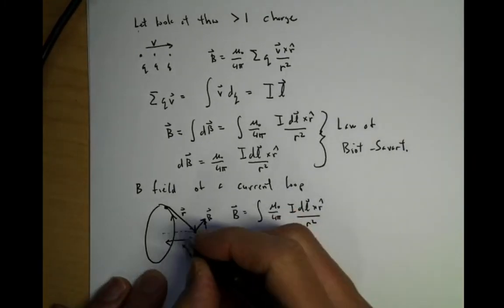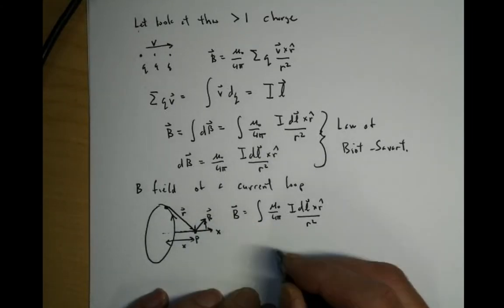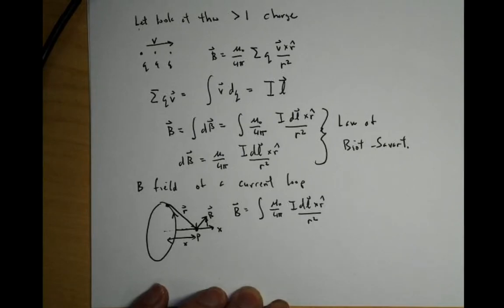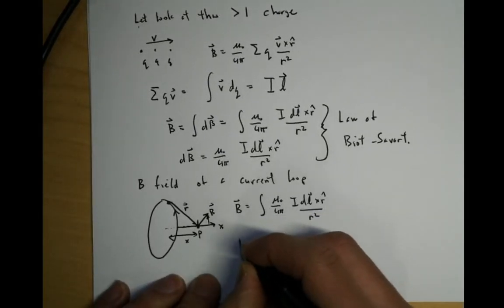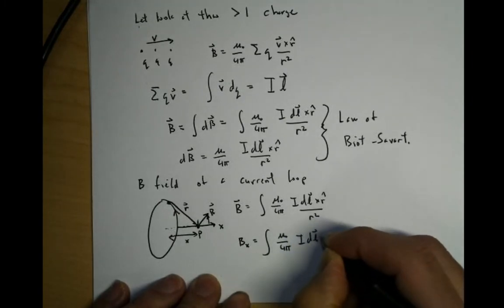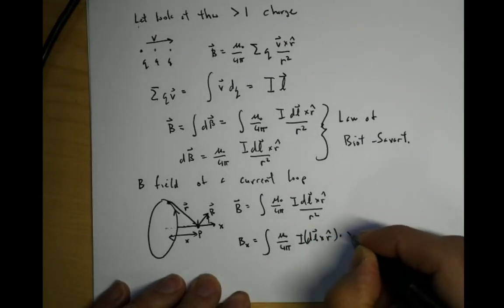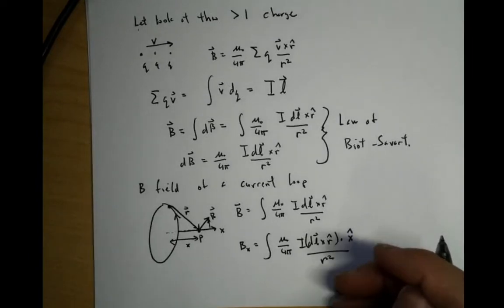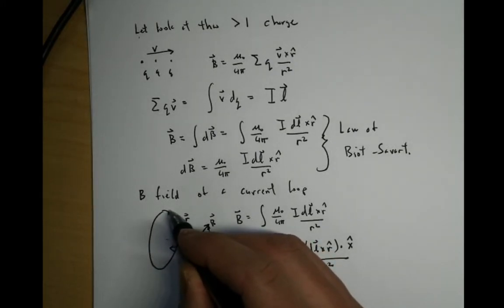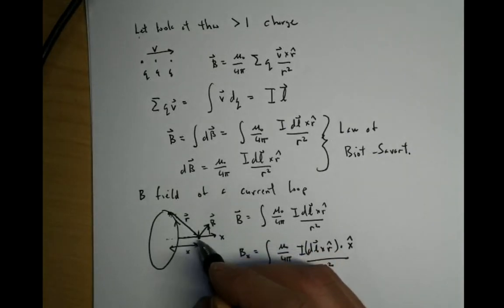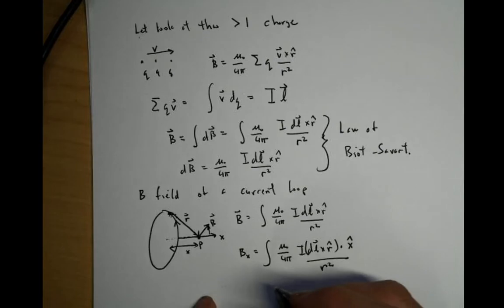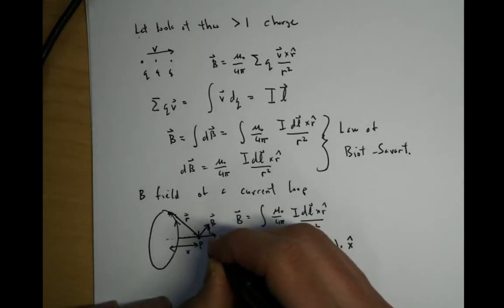All I care about is the B field along the x direction. So Bx is equal to the integral of mu 0 over 4 pi, I dl cross r hat, dotted with the x hat direction, divided by r squared. One thing to note is that dL is at a right angle, so the cross product just has the normalization we care about — the dot with x hat gives us the cosine of phi. This is going to be some angle theta, and phi equals pi over 2 minus theta.